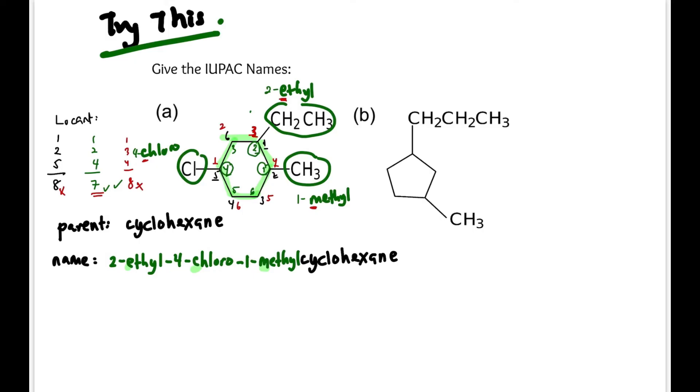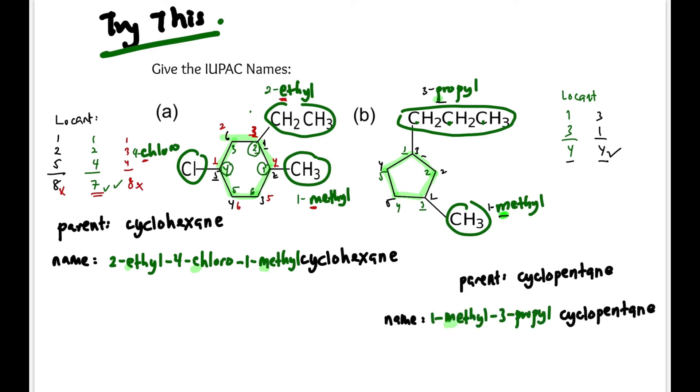Now let's go to question B. The compound has two substituents. The parent has five carbons, so cyclopentane is the parent. The top substituent is propyl with three carbons, and the bottom one is methyl. When there are only two substituents, we start from the one that's alphabetically earliest - in this case M for methyl. The locants will be the same either way: 1+3=4. So we prioritize methyl first: 1-methyl, and propyl at carbon three. The full name is 1-methyl-3-propylcyclopentane. Remember the two important tips: lowest locant and alphabetical order.